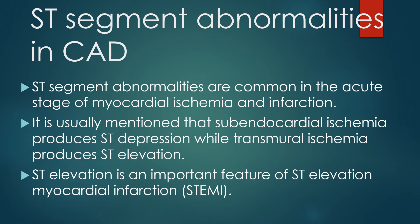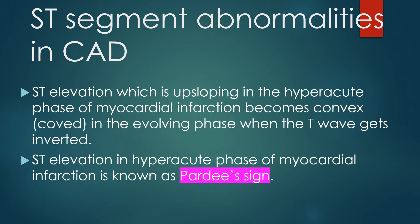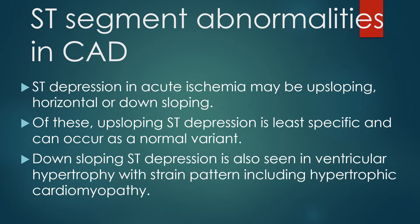ST segment abnormalities are common in the acute stage of ischemia and infarction. Subendocardial ischemia produces ST depression while transmural ischemia produces ST elevation. ST elevation is an important feature of STEMI. ST elevation, which is upsloping in the hyperacute phase, becomes convex in the evolving phase when the T wave gets inverted. The upsloping ST elevation in the hyperacute phase is known as the Pardee sign. ST depression in acute ischemia may be upsloping, horizontal, or downsloping — upsloping being least specific. Downsloping ST depression is also seen in ventricular hypertrophy with strain pattern including hypertrophic cardiomyopathy.